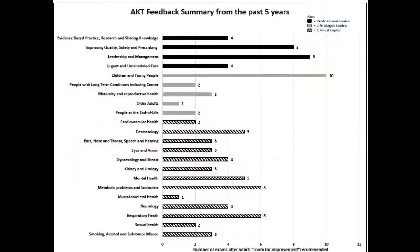There's now a much more detailed report looking at AKT feedback from the last five years. I would really recommend you have a look at that to see the areas that tend to feature quite heavily. You can see leadership and management, children and young people, dermatology in terms of images, mental health, metabolic problems and endocrine issues, and respiratory health.